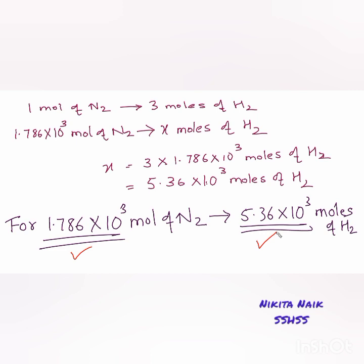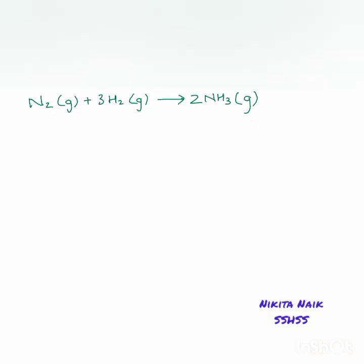We require 5.36 × 10³ moles of H₂, but we only have 4.96 × 10³ moles of H₂. So we are running short of H₂. Thus, H₂ is our limiting reagent. The amount of product formed depends on the limiting reagent — that quantity determines the amount of product formed.